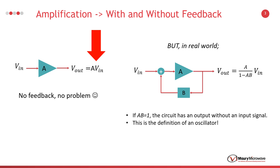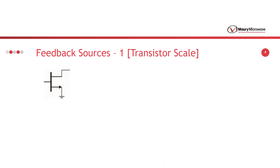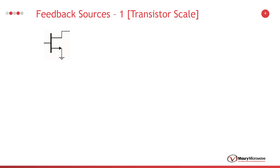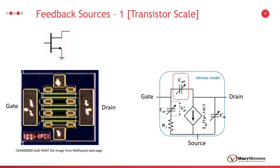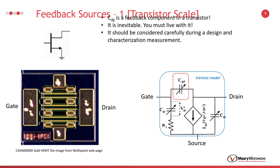I will show some feedbacks in a transistor, packaged device, implemented circuit, and system in the following slides. Transistors are the essential components of RF systems. Here we see a FET transistor. This is a simplified model of an HEMT. One of the most important feedback sources in a FET transistor is the capacitance between the drain and gate. Although its value is relatively small, it has a strong feedback effect. It's an inevitable feedback component caused by the physical structure of the transistor.